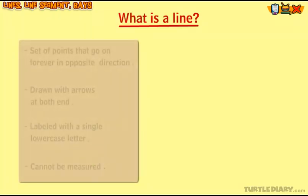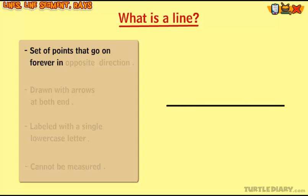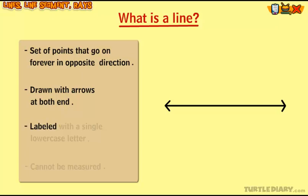What is a line? A line is defined as a set of points that go on forever in opposite directions. A line is drawn with arrows at both ends to show that it continues to extend infinitely and labeled with a single lowercase letter. Since lines extend forever, you cannot measure them.